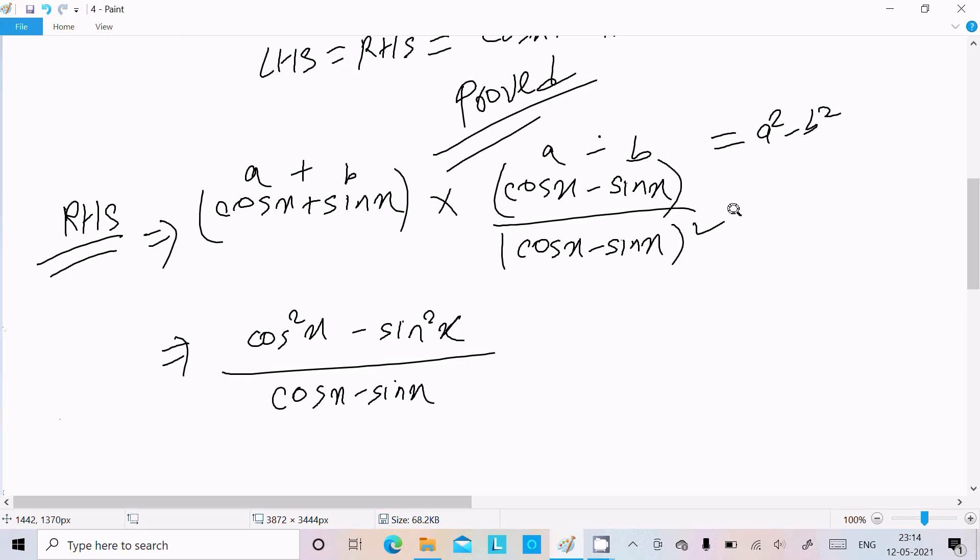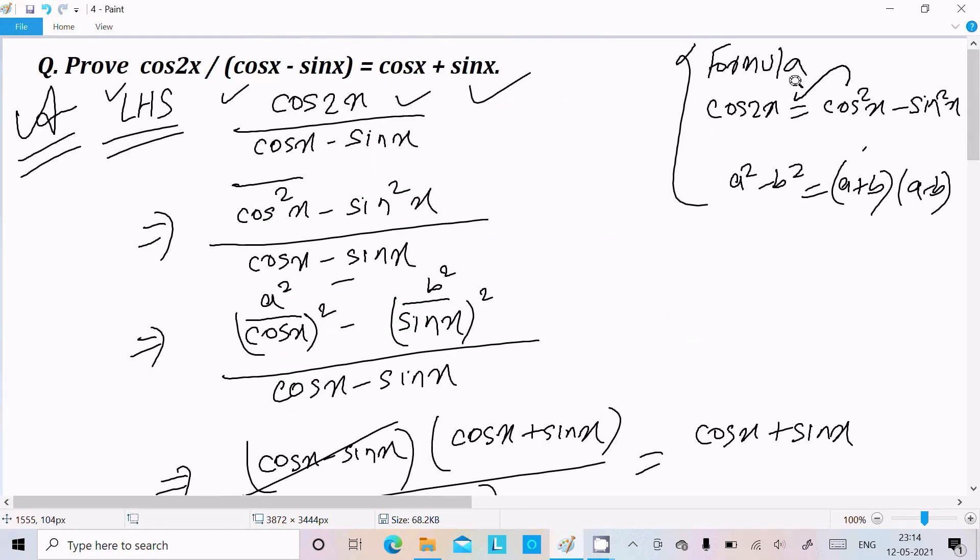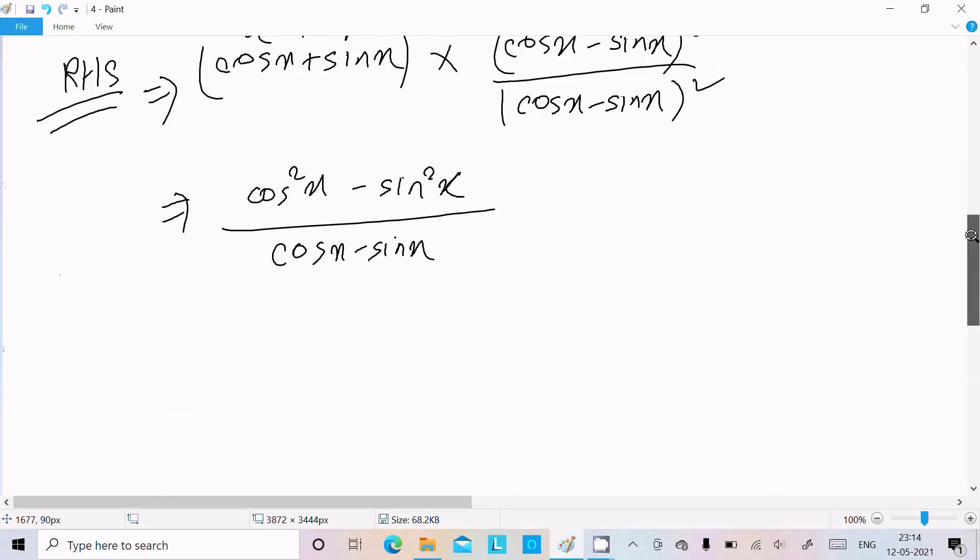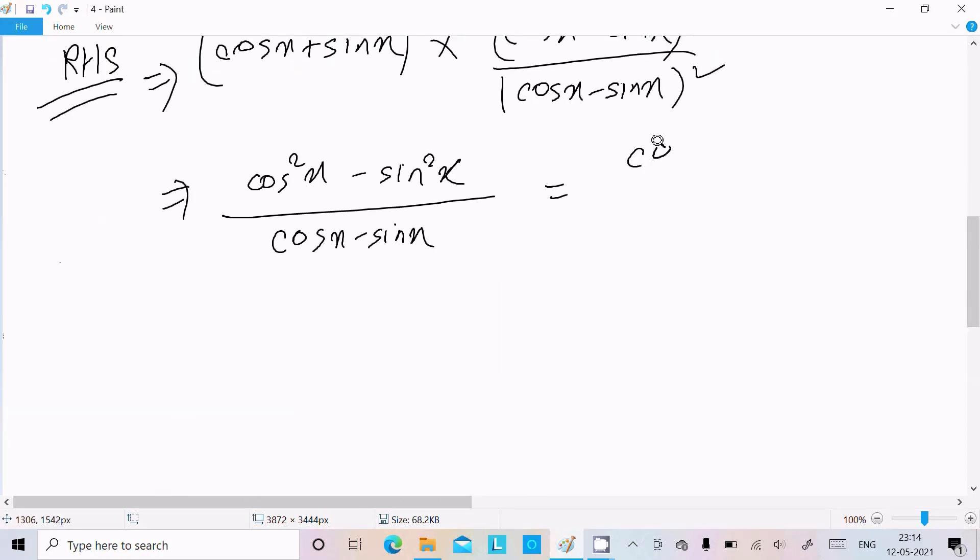So this is the formula a plus b, a minus b, a squared minus b squared. You need to multiply cosx minus sinx, cosx minus sinx. If you do that then it will cancel. Now cos squared x minus sin squared x equal to cos2x, so here we can write cos2x.